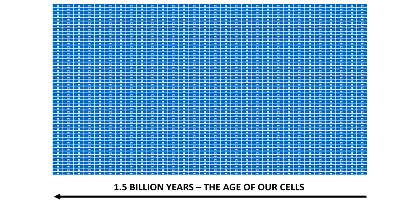Bacteria spent a lot of time on this planet alone. But the development of a new kind of cell — a kind of cooperation where cells would work together — created this new branch on the tree of life. We're part of that branch. The cells that make us up are eukaryotic cells, and those are about a billion and a half years old.